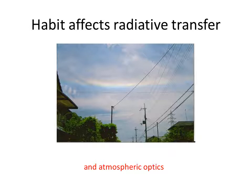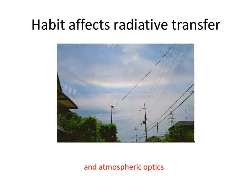Habit also affects radiative transfer. Radiative transfer through high clouds, which are mostly ice, has a big impact on climate. We see the habit effect on light scattering vividly in optical displays like the circumhorizontal arc shown here. This forms when relatively thin tabular crystals fall slowly, staying almost perfectly horizontal like little flying saucers. Additionally, vapor in the upper troposphere is an important greenhouse gas, and the amount of vapor is influenced by mass uptake to the ice — a rate that depends on crystal habit.